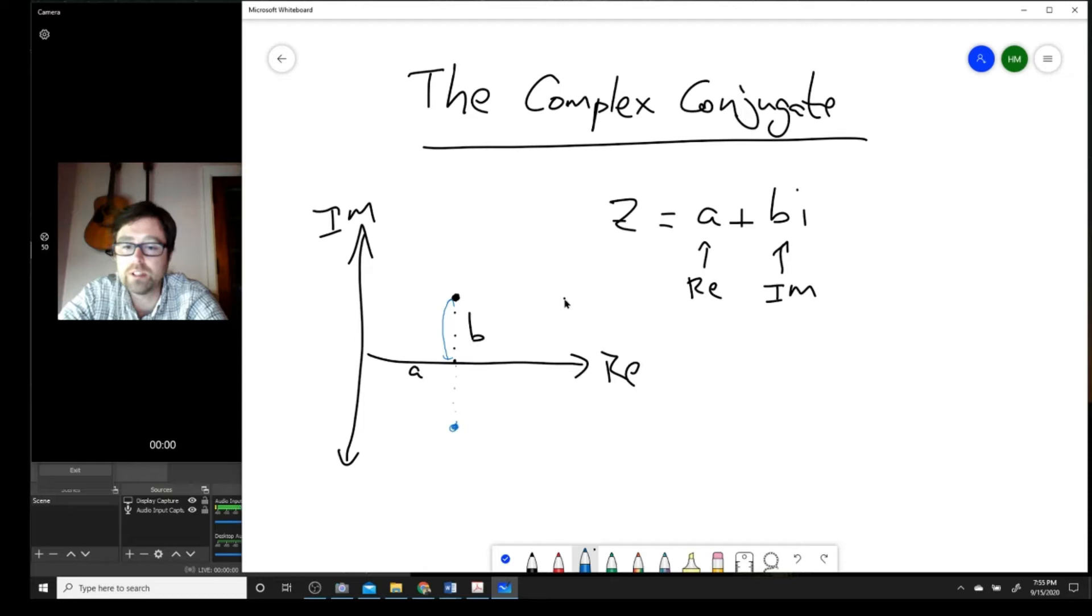And here you can see you have still on the real axis, you've gone across a, but now on the imaginary axis, you've gone down b rather than up b. So in this case, the complex conjugate, which is given the symbol z hat, is equal to a minus bi.